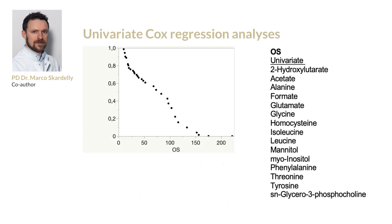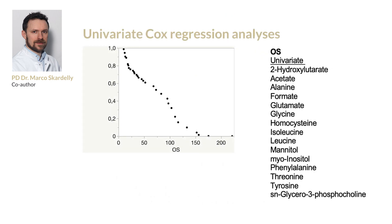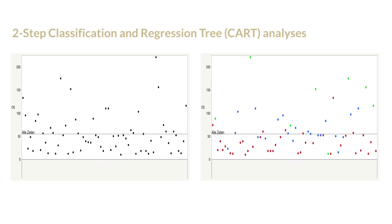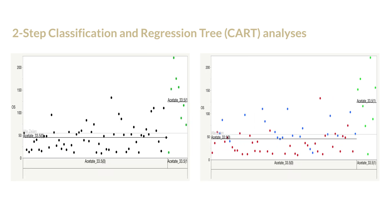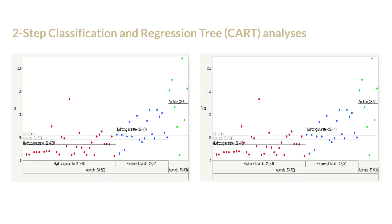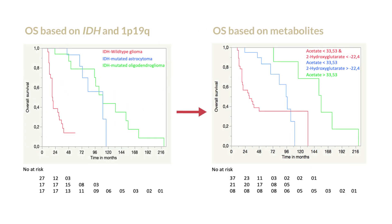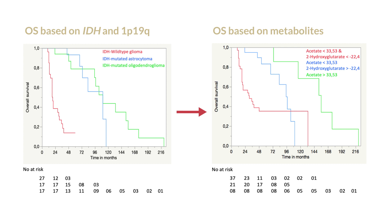Using univariate COX regression, we identified metabolites that could serve as potential differentiators in these different groups. We then performed a two-step CART analysis, taking into account specific metabolites and their cut-offs and clinical outcome. Here you can see the distributions of all patients as black dots, with metabolite-based distributions of patients highlighted in different color-coded dots. Looking at the Kaplan-Meier curve, you can appreciate that the metabolite profile actually better differentiates clinical outcome in the IDH-mutated group.